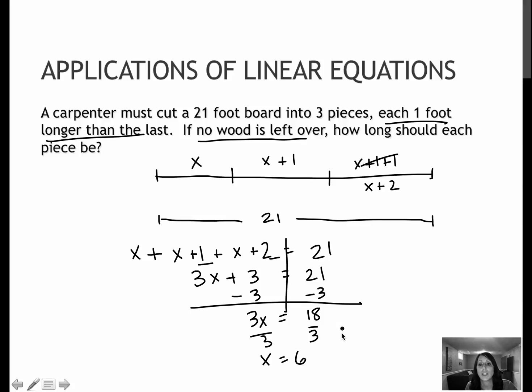How long should each piece be? The pieces of wood should be 6 feet, x plus 1 would be 7 feet, and x plus 2 would be 8 feet. Those are the three pieces of wood. Double check that they add up to 21, and they do.